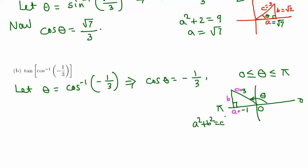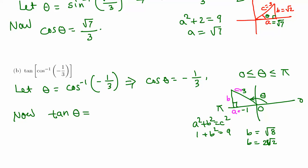Using the Pythagorean theorem: negative 1 squared plus B squared equals 3 squared, so 1 plus B squared equals 9, giving B squared equals 8. Thus B equals root 8, which simplifies to 2 root 2 (since 8 equals 4 times 2 and root 4 is 2). Tangent is opposite over adjacent, so tangent theta equals 2 root 2 over negative 1, which equals negative 2 root 2. That is the final answer.